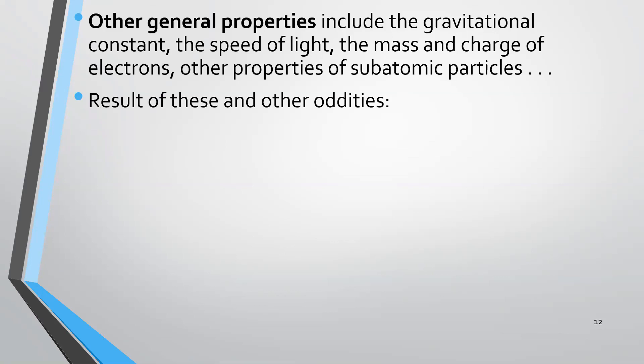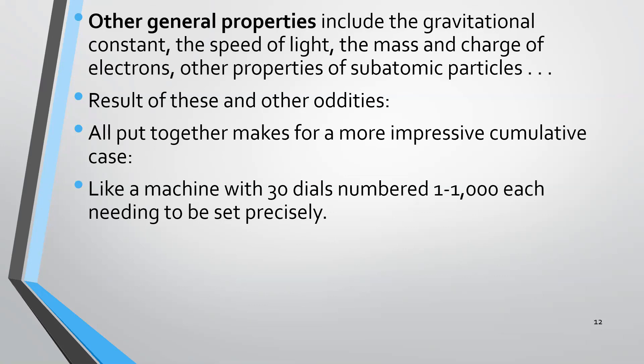As a result of these oddities that we've talked through and other oddities, this all put together makes for a more impressive cumulative case. One way of thinking about this is something Robert Collins first came up with. The universe is kind of like a machine with 30 dials, each dial numbered 1 through 1,000, and each has to be set precisely. Like, the first dial has to be set at 942, and the second dial has to be set at 37, and the third dial has to be set at 557, and so on. If you change the setting on any one of those dials, you mess something up so that you don't have an environment suitable for living organisms to exist.